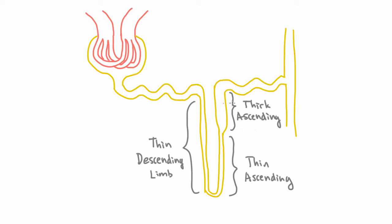The thick ascending limb is where you reabsorb most of the sodium in the loop of Henle. Let's look at that in more detail.